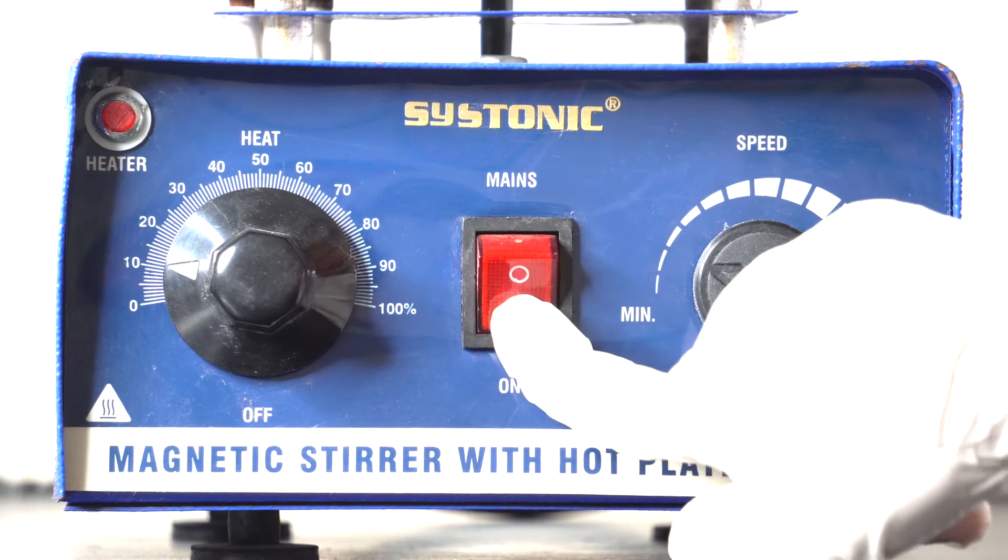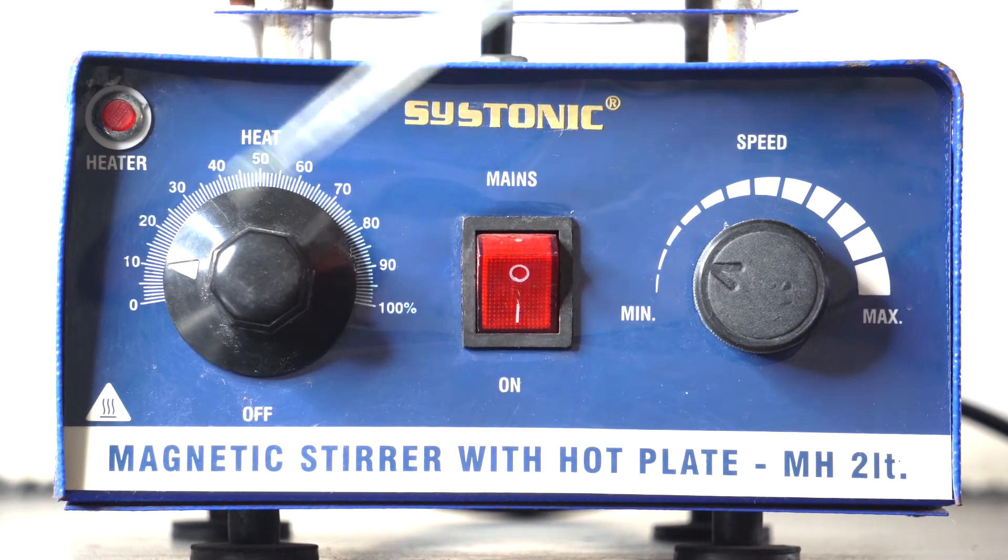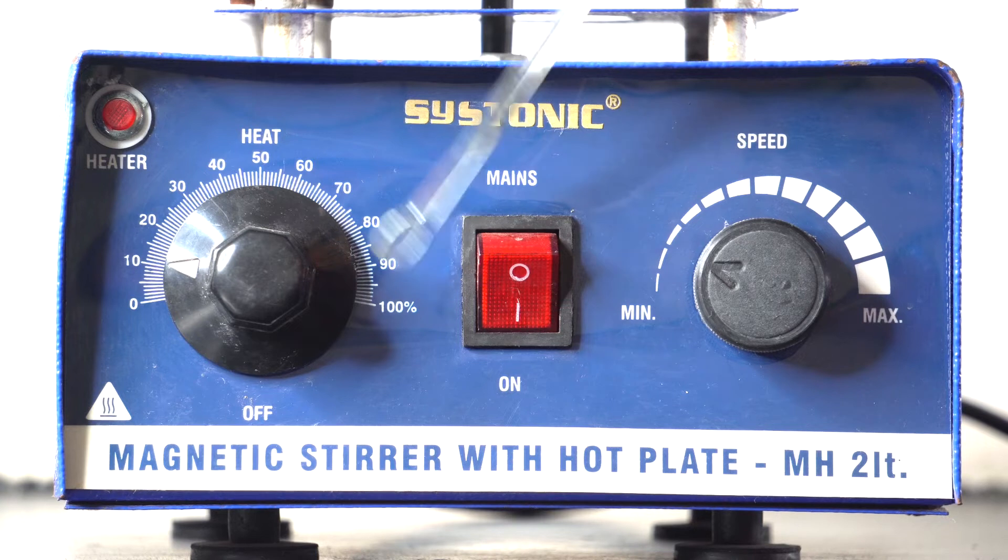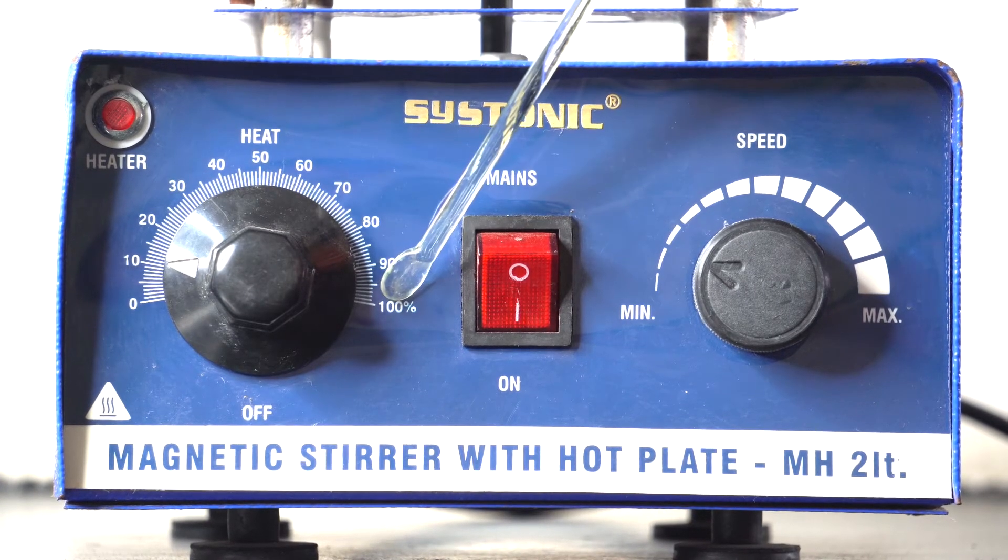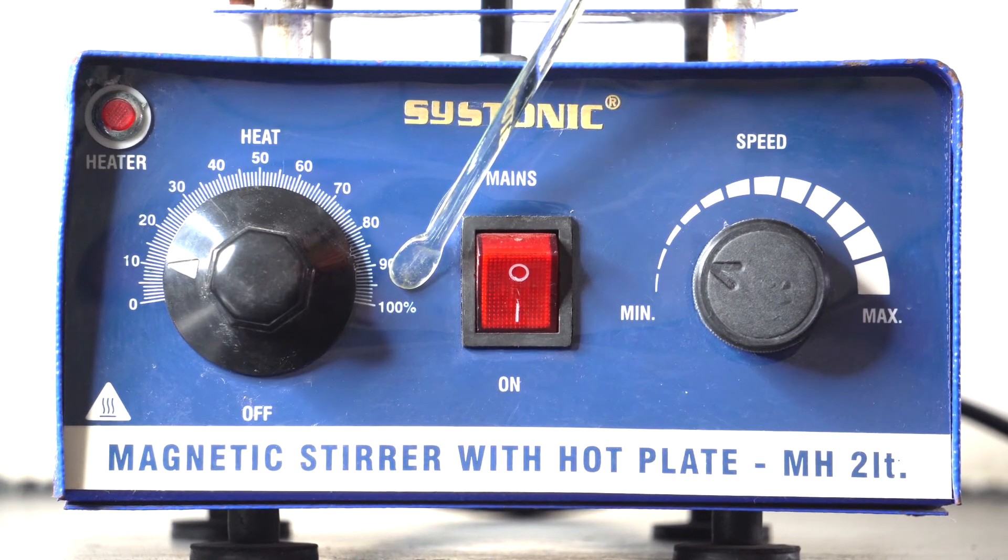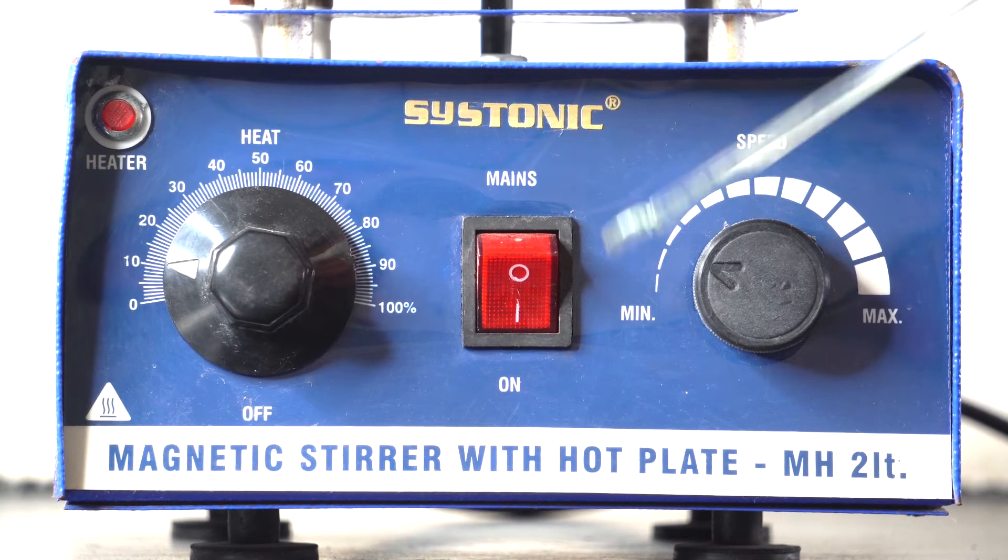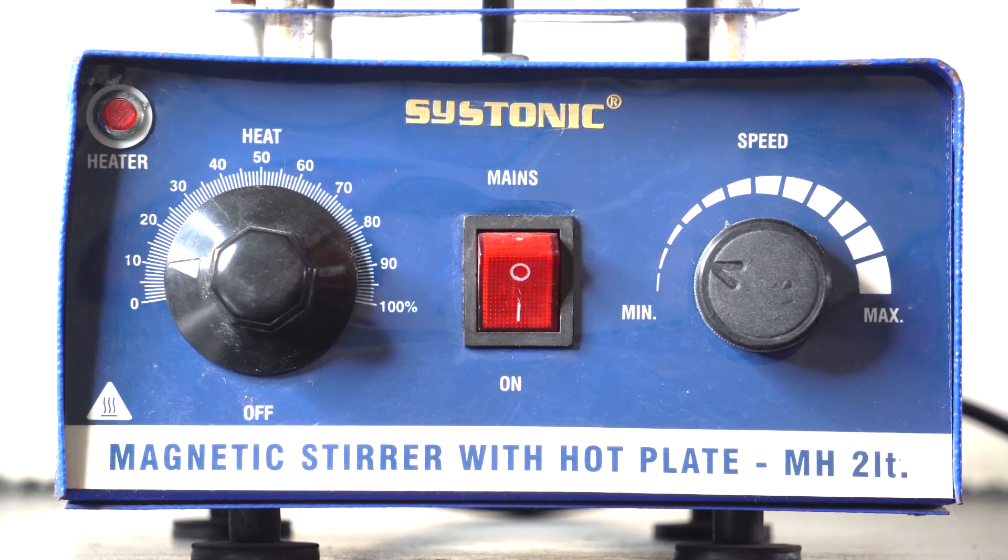Therefore, first we need to switch on the switch to operate the machine. Then we can set the temperature and speed on low, medium, and high with the help of the regulator knob.